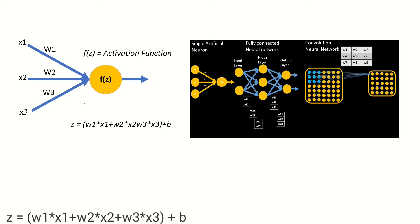Before we get started, just a quick revision of how computational units look in a neural network. This is the computational unit in any neural network — whether it's a simple, fully connected, or convolutional network. To compute the output of one node, we multiply each input with individual weights. For three inputs, we multiply weight one with x1, weight two with x2, weight three with x3, add them together, and then add a bias for every output node.